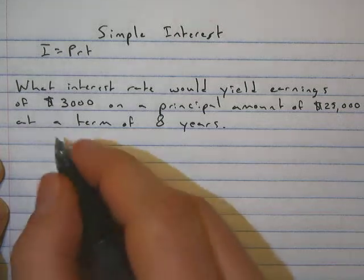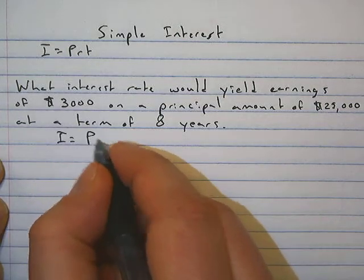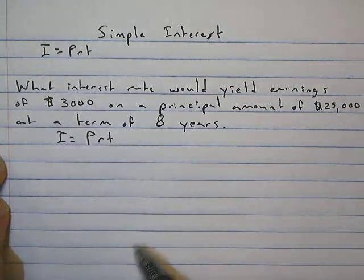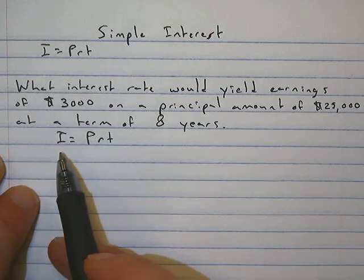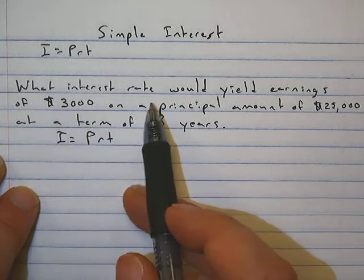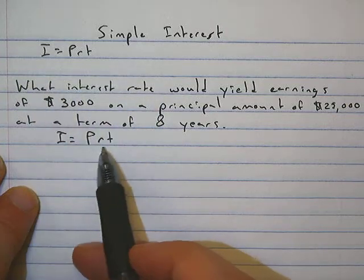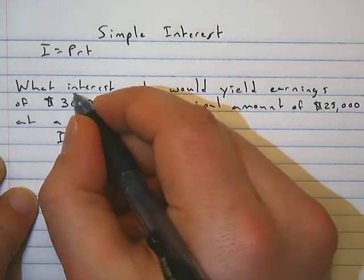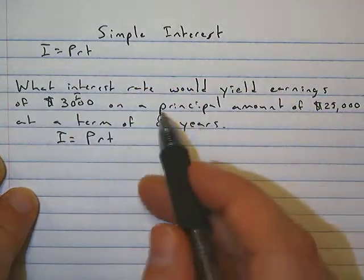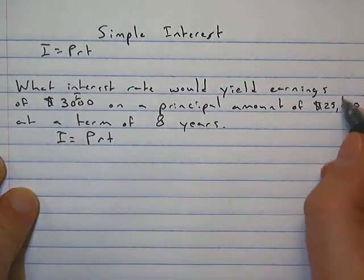So the first step that we need to do is to write down our formula: I equals PRT. We need to then comb through our word problem and figure out which variables we have. So it says what interest rate, so we're going to be looking for R. But would yield earnings of $3,000, so that's our interest, so I is right there.